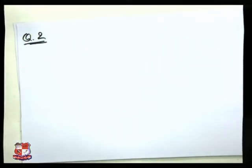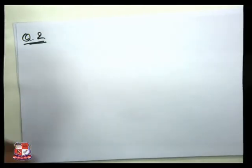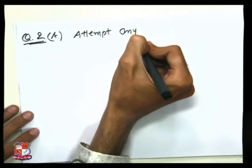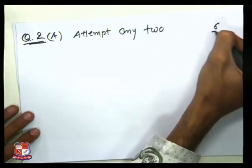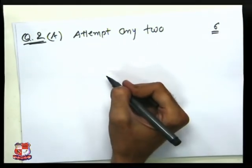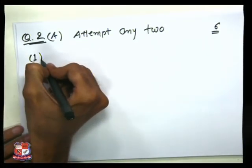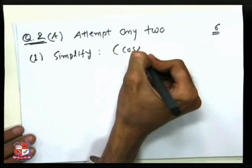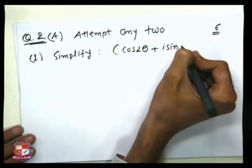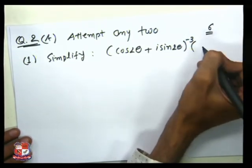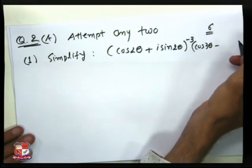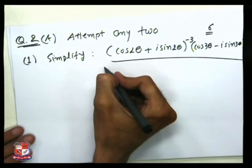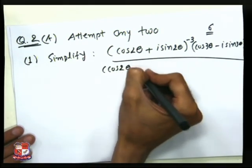The next section says attempt any two, which is from part A with six marks, so each question is three marks. The first question is to simplify: (cos 2θ + i·sin 2θ)^(−3) · (cos 3θ − i·sin 3θ)² divided by (cos 2θ − i·sin...).